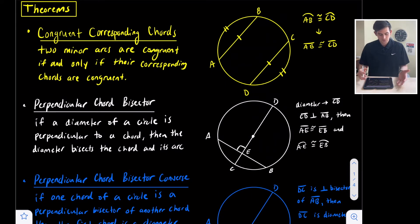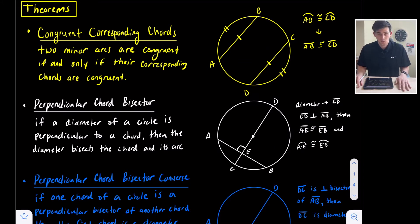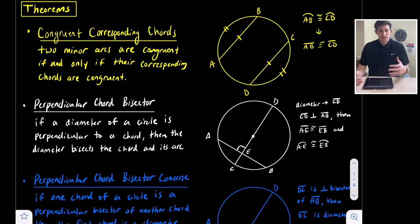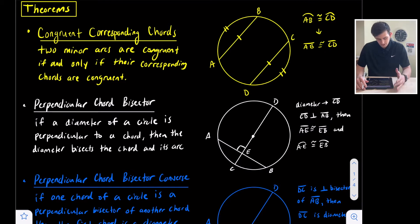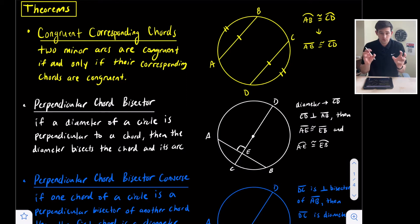There are two theorems shown here in yellow and white, and the blue at the bottom is the converse of the theorem in white. We'll look at these three, talk through them, do a couple of examples, and then look at one more theorem at the end. The first one in yellow is the Congruent Corresponding Chords Theorem. It states that two minor arcs are congruent if and only if their corresponding chords are congruent — in the same circle or in two congruent circles.